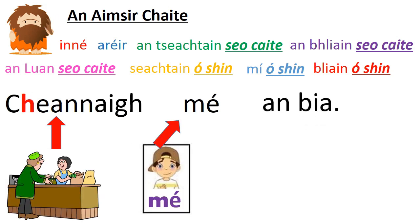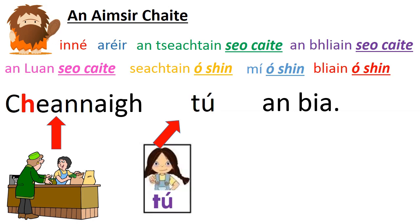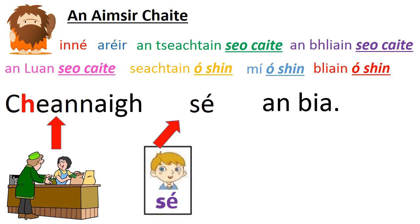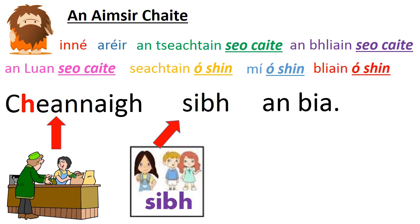Now we're going to look at the other family of verbs, which we call An Dara Réimniú. These are verbs that have two syllables — you can hear that. Ceannaigh — tá dhá shiolla ann — two syllables there. Cheannaigh mé an bia — I bought the food. Notice the séimhiú — that's our H to tell us we're looking at the past tense. Cheannaigh tú an bia — you bought the food. Cheannaigh sé an bia. Cheannaigh sí an bia. Cheannaigh sibh an bia — remember that's the 'you plural' — ye bought the food.